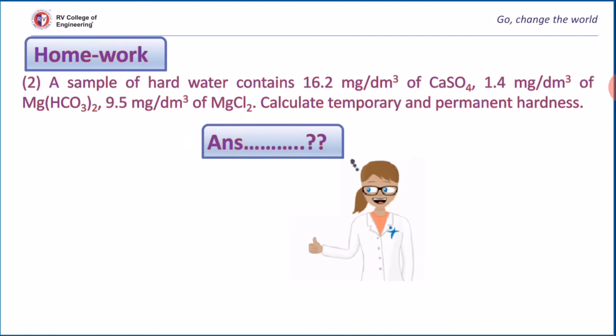The second problem is homework for you. A sample contains 16.2 mg/dm³ of calcium sulfate, 1.4 mg/dm³ of magnesium bicarbonate, and 9.5 mg/dm³ of magnesium chloride. Calculate the temporary and permanent hardness using the same method.